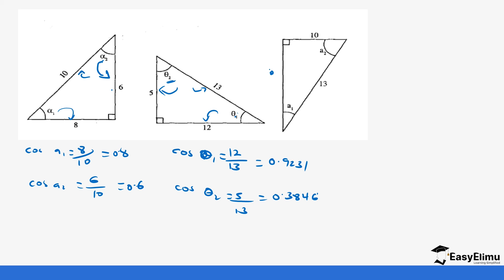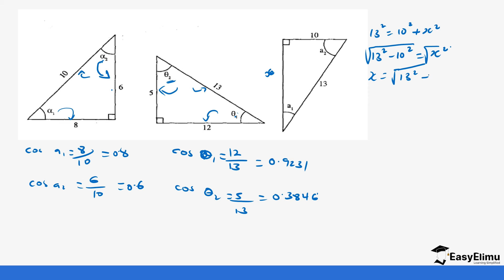To find the missing side using the Pythagorean theorem, we say 13 squared equals 10 squared plus x squared, so x squared equals 13 squared minus 10 squared. Taking the square root of both sides gives x equals the square root of 169 minus 100, which is the square root of 69, which equals 8.3.